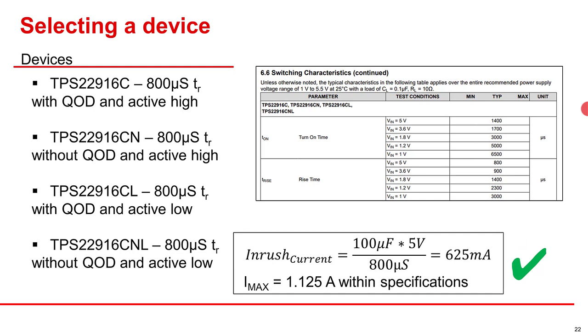The C version of the device has an 800 microsecond rise time. So we run the inrush current calculation with that instead, and we get under the absolute max current specification of the device. This means we can choose the TPS22916C as our load switch.